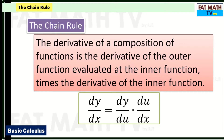The chain rule states that the derivative of a composition of functions is the derivative of the outer function evaluated at the inner function, times the derivative of the inner function. So dy/dx equals dy/du times du/dx — you take the derivative of y with respect to the outer function u, then multiply by the derivative of u with respect to x.